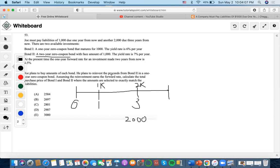So basically, he plans to reinvest the proceeds from bond two in a one year zero coupon. Assuming the reinvestment earns the forward rate, calculate the total purchase price of bond one, bond two. So we're going to reinvest. That means that we're going to reinvest the $2,000 that we want to pay off the liability as a one year zero coupon bond using the forward rate that is given here at 6.5%. So it's a one year coupon bond that we want to reinvest.